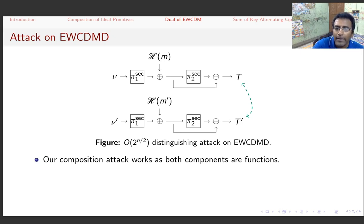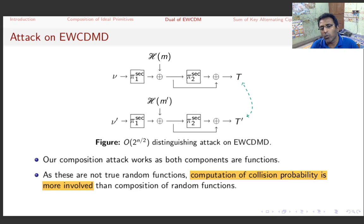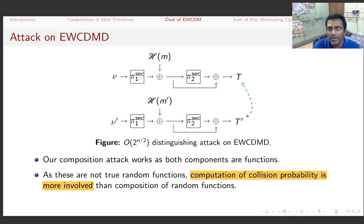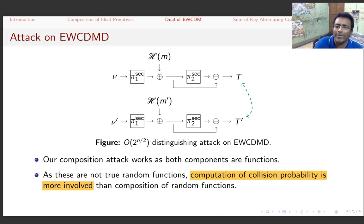Note that the composition attack works for both component functions. Since these are not true random functions but quasi-random functions, a bit more involved calculation is needed to determine the exact collision probability for these constructions, but it is manageable.